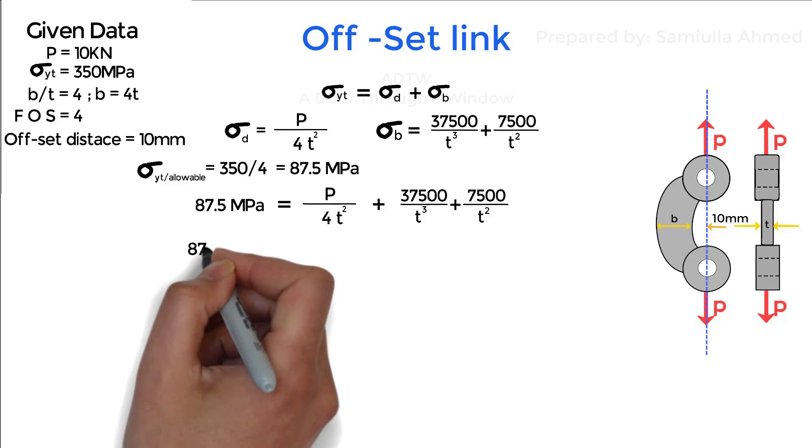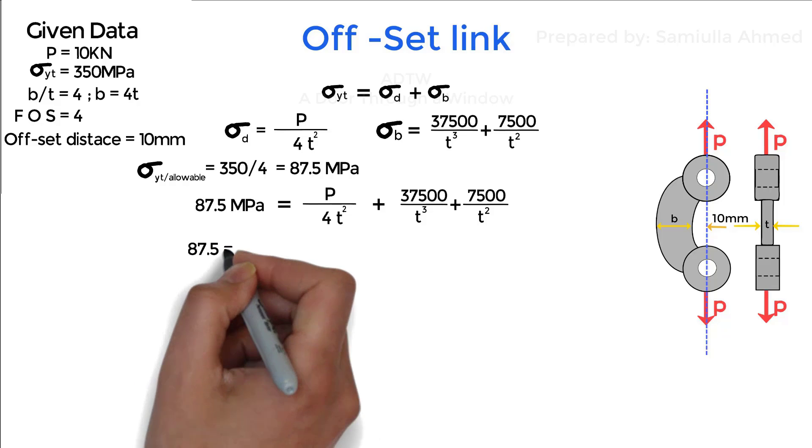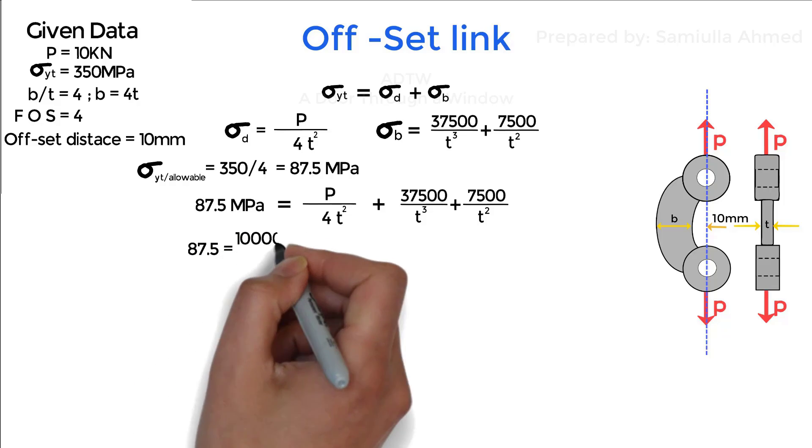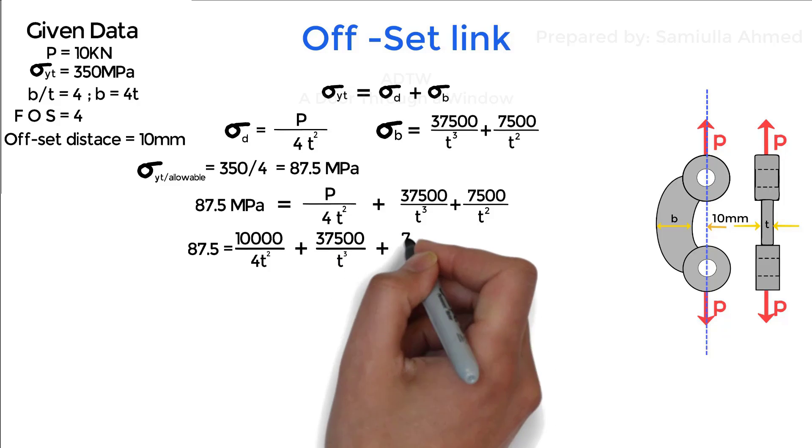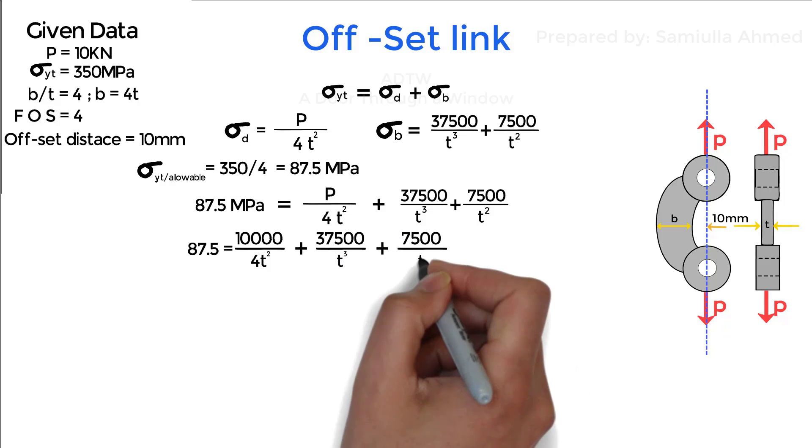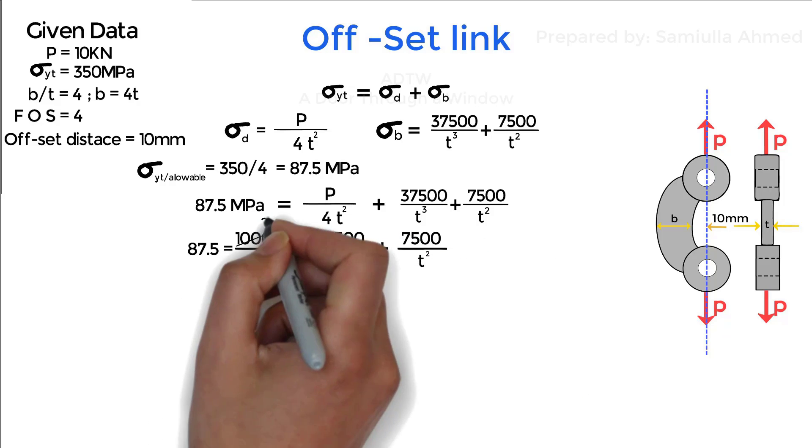Therefore we have 87.5 equals direct stress which is P by 4t square which is nothing but 10 kN upon 4t square plus bending stress which is 37,500 by t cube plus 7,500 by t square.